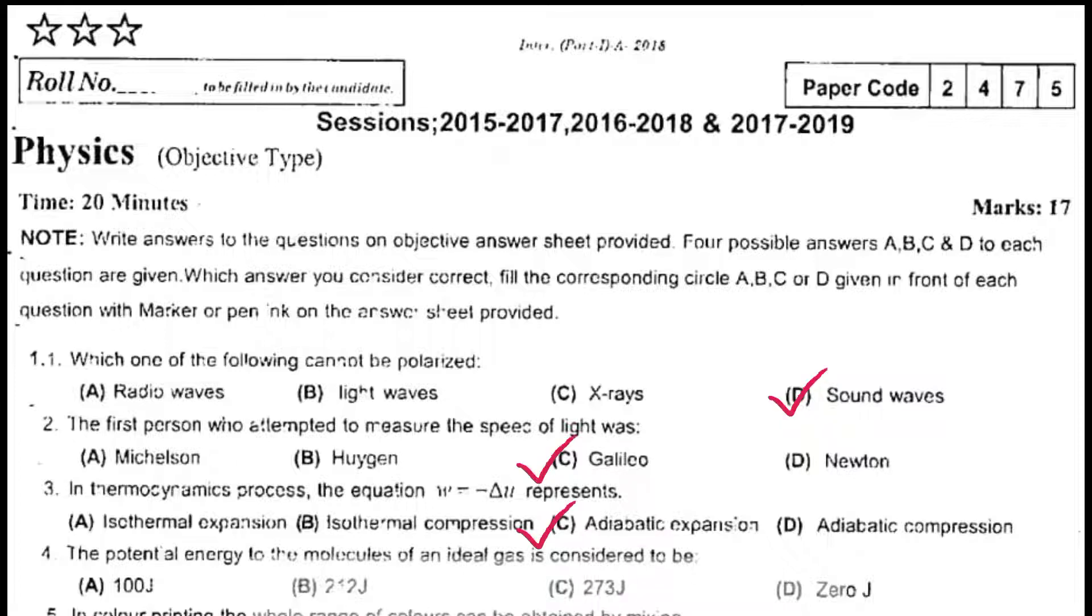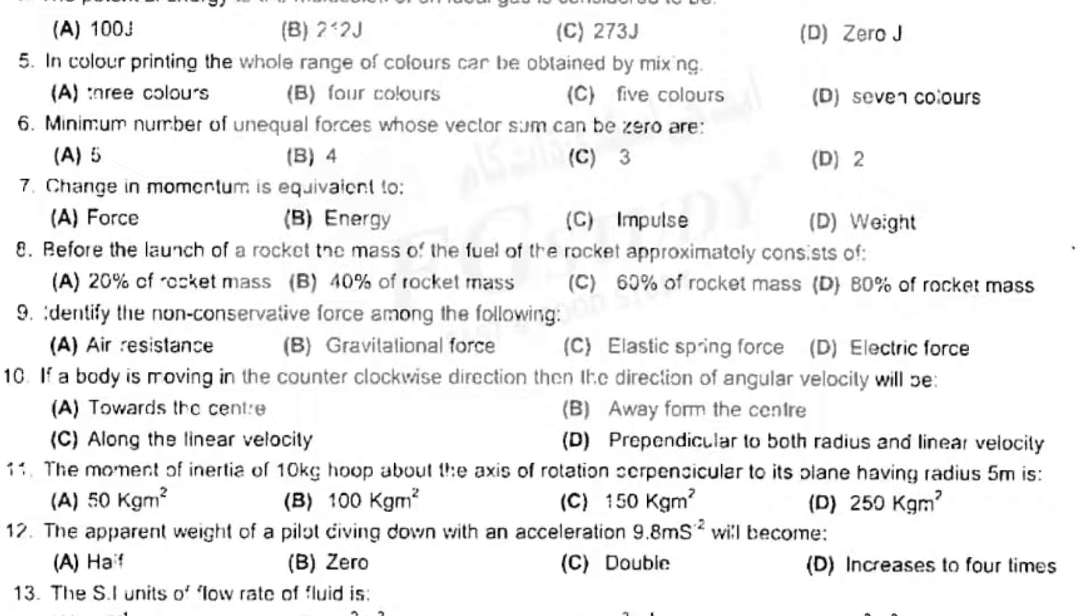In thermodynamic process the equation W = -ΔU represents adiabatic expansion. The potential energy of the molecules of an ideal gas is considered to be zero joules. In color painting the whole range of colors can be obtained by mixing four colors. Minimum number of unequal forces whose vector sum can be zero is three. Change in momentum is equal to impulse. Before the launch of rocket, the mass of fuel of the rocket approximately consists of 80% of rocket mass.